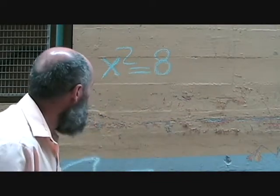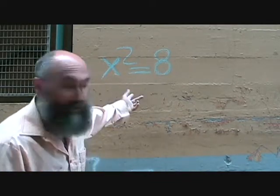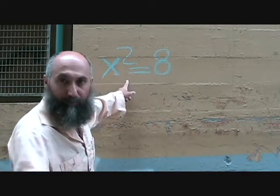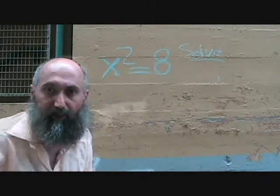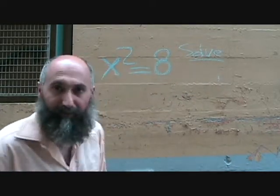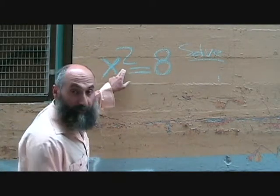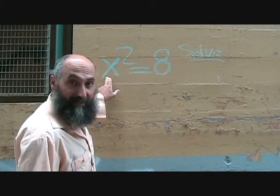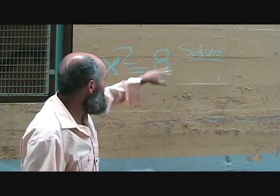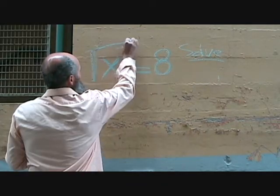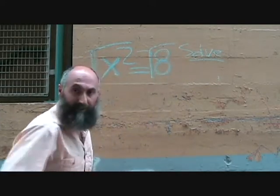Let's say we have x squared is equal to 8. If the question says solve for x, to get rid of the squared, we have to take the square root of it. So if you want to get x by itself, you take the square root of one side, and you've got to take the square root of the other side too.